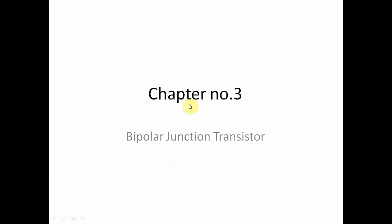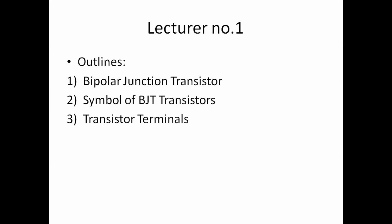Hello, now we will start chapter number three. Chapter number three is the Bipolar Junction Transistor. We already studied two chapters in basic electronics: the first one is the introduction of electronics and the second one is diodes and their applications. Now we will study chapter number three, which is the Bipolar Junction Transistor. This is the last chapter of basic electronics.